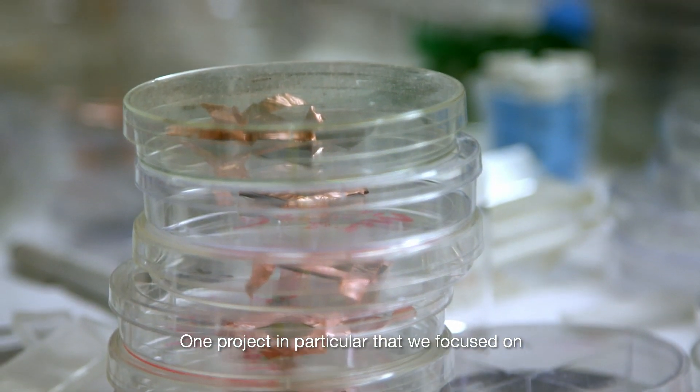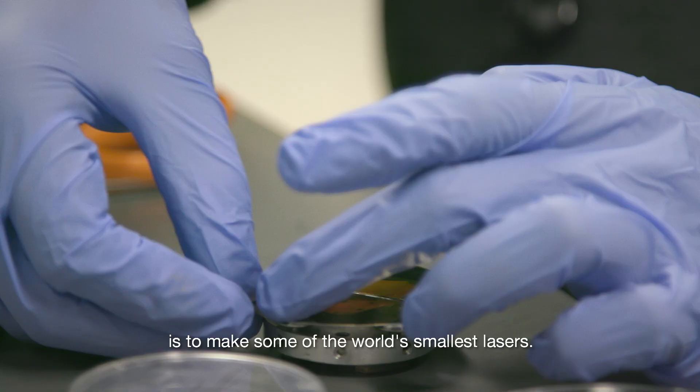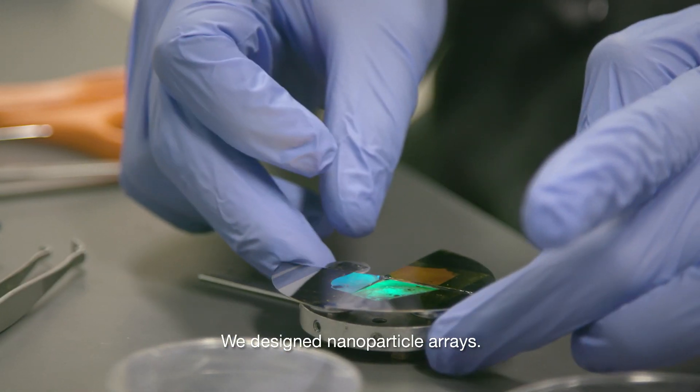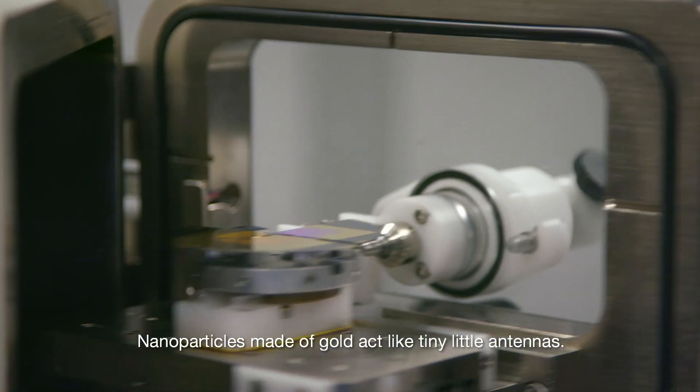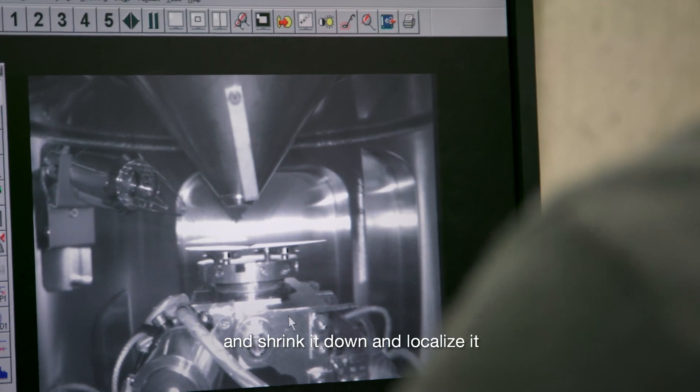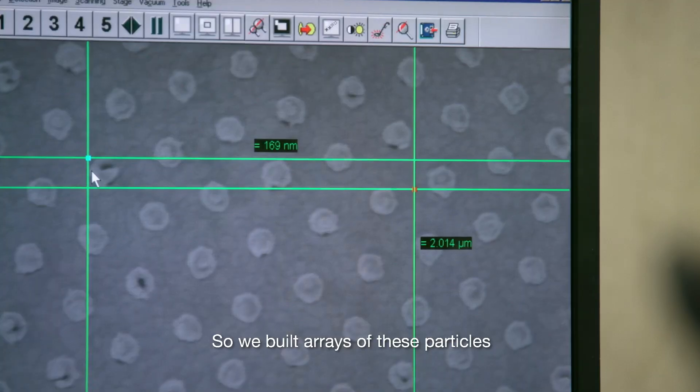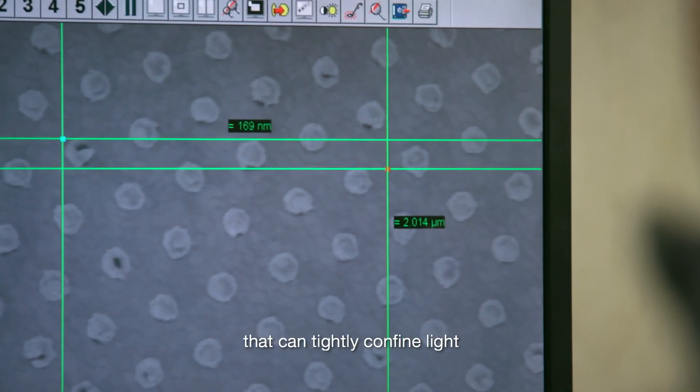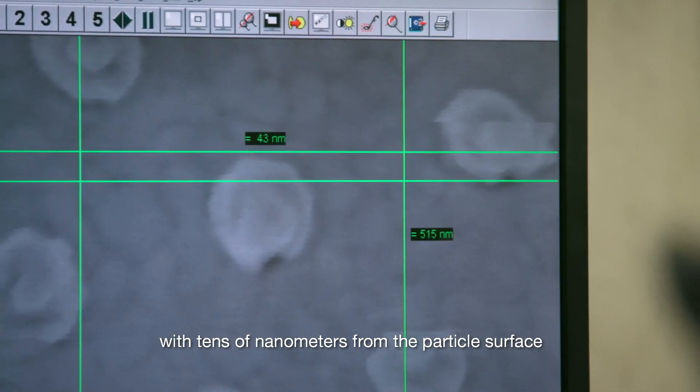One project in particular that we focused on is to make some of the world's smallest lasers. We designed nanoparticle arrays. Nanoparticles made of gold act like tiny little antennas. They can somehow capture large wavelengths of light and shrink it down and localize it to just on the surface of the particle. So we built arrays of these particles that can tightly confine light with tens of nanometers from the particle surface.